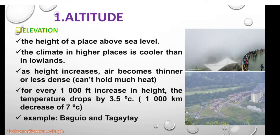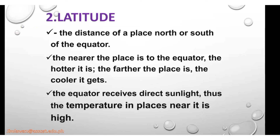For every 1,000 kilometers, the temperature decreases by 7 degrees Celsius — so the higher, the colder. For latitude — the distance of a place north or south of the equator — the nearer a place is to the equator, the hotter it is. The Philippines is near the equatorial line. The farther from the equator, the cooler it gets. The equator receives direct sunlight, thus the temperature in places near it is high.